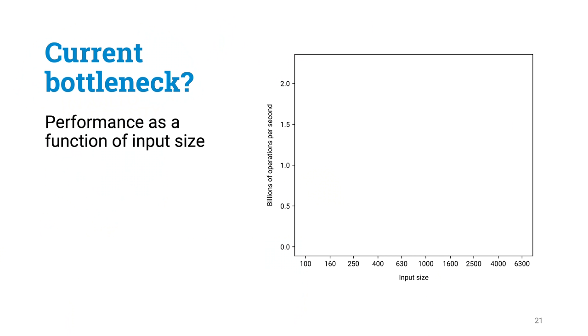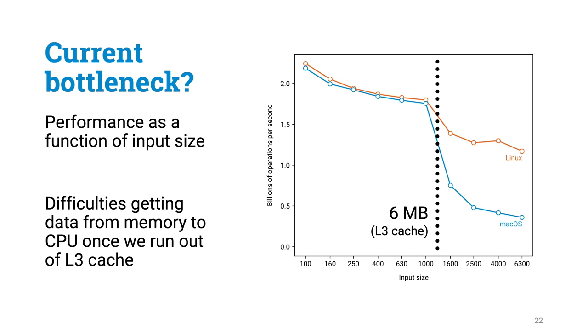Let's do a very simple experiment. We simply run our program with different input sizes, and measure how long does it take to solve the problem for each possible value of n. And if you calculate how many useful arithmetic operations you are doing per time unit, this kind of figure emerges.